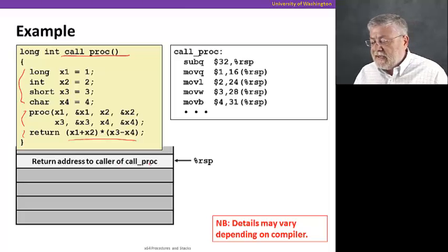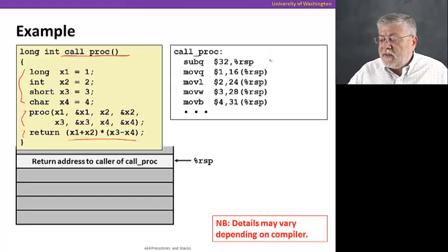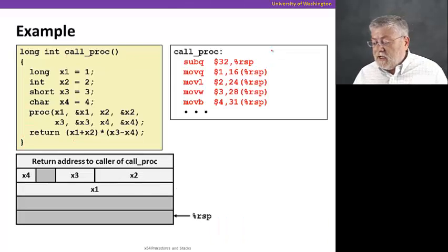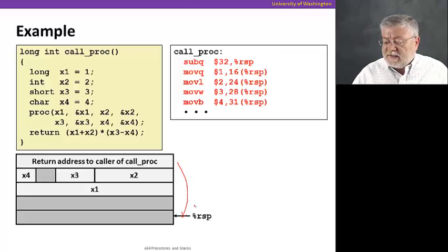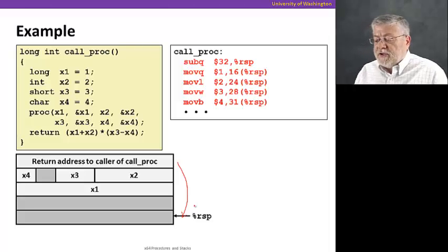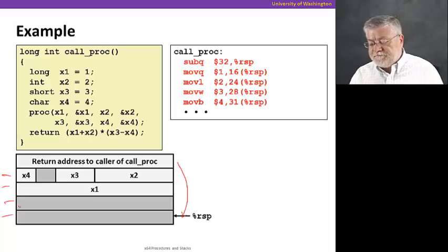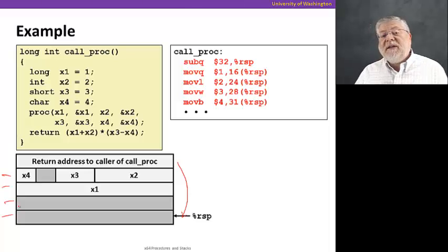The way call proc is gonna start is its stack pointer is pointing to where it has to return to whatever procedure called it. That's the top of the stack. The first thing that it's gonna do is allocate 32 bytes on the stack for the local variables that it will need. By adjusting the pointer down 32, the stack pointer is now down here. 32 is four times eight bytes, so four eight byte words.